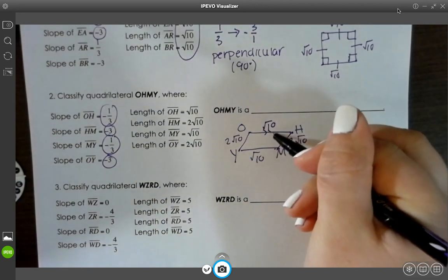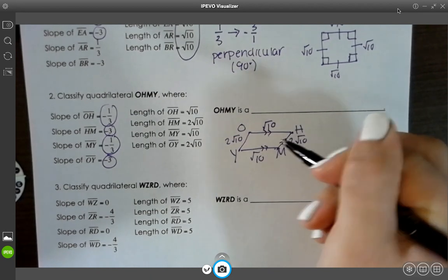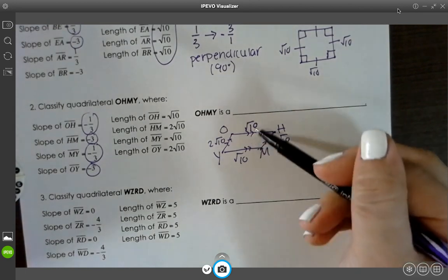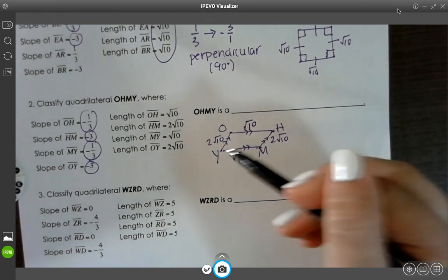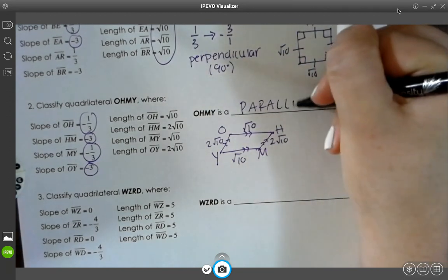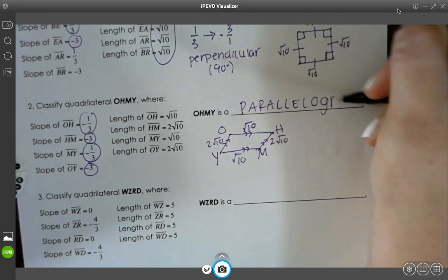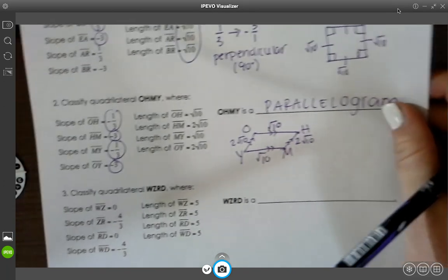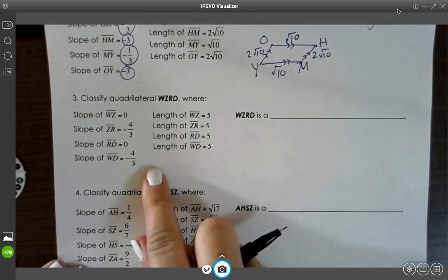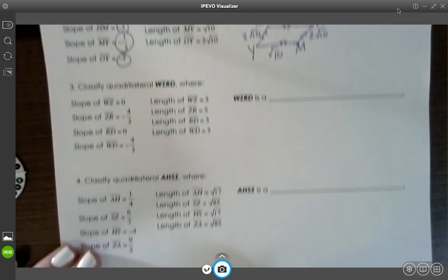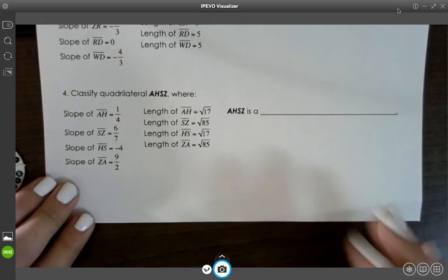So that means we have two sets of parallel lines, and both opposite sides are equal. So this will be a parallelogram. Okay, if you want to try the next one, you can try the next one.